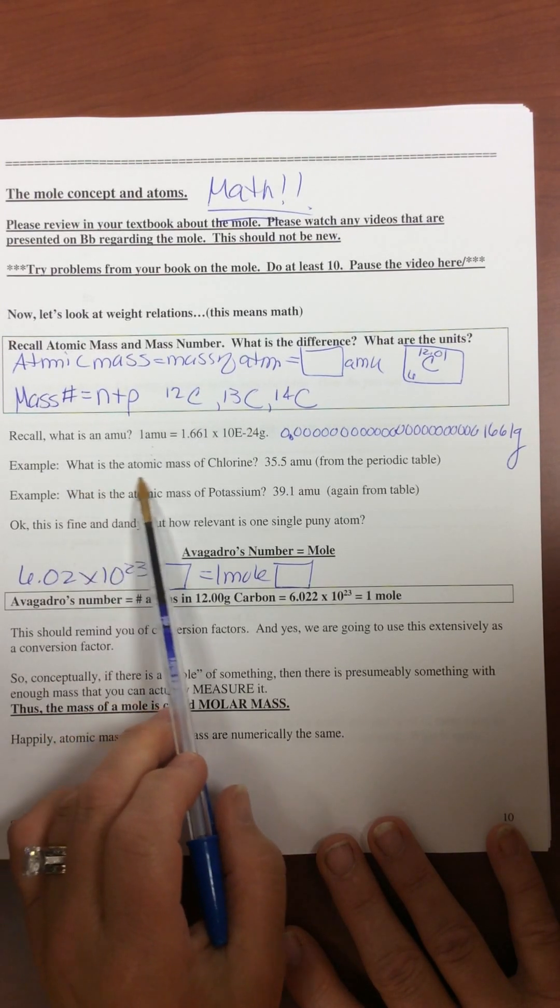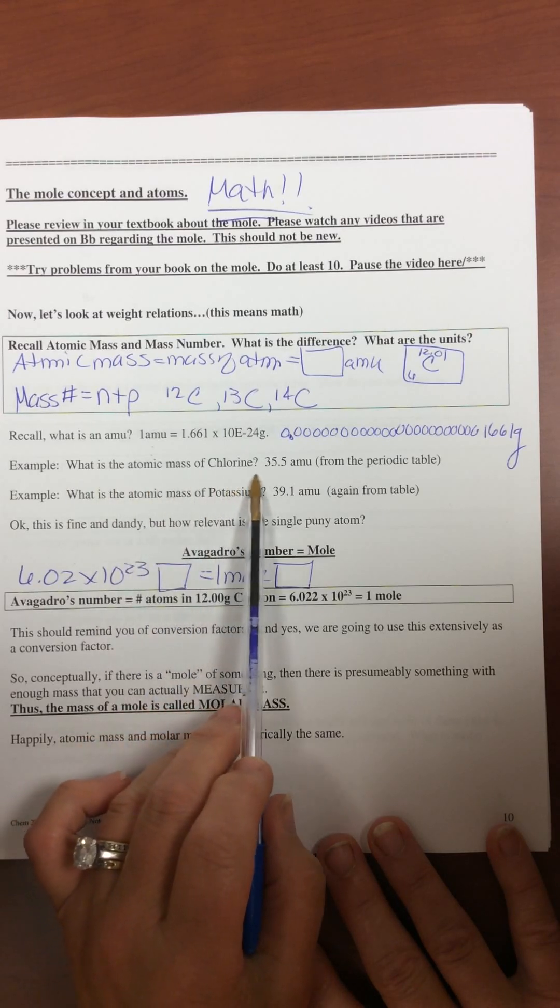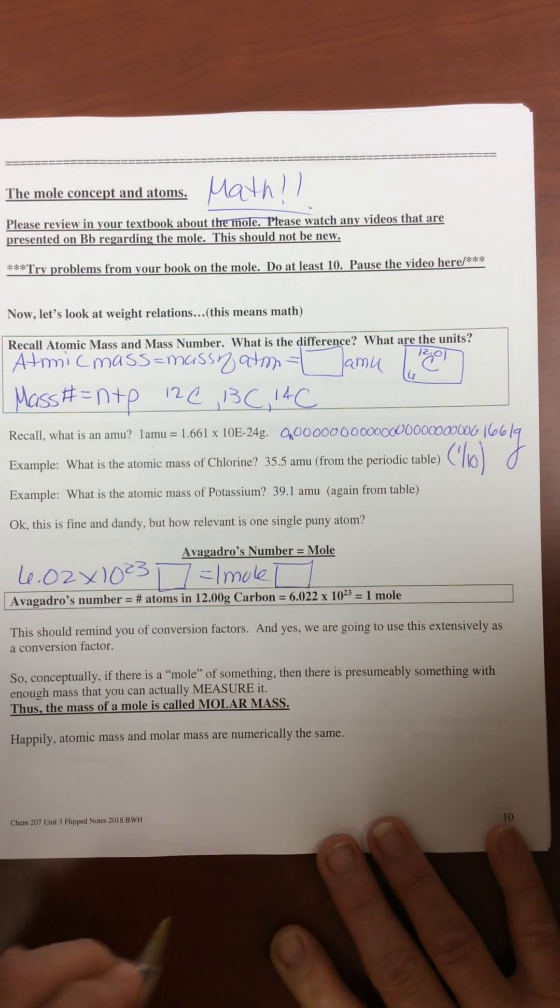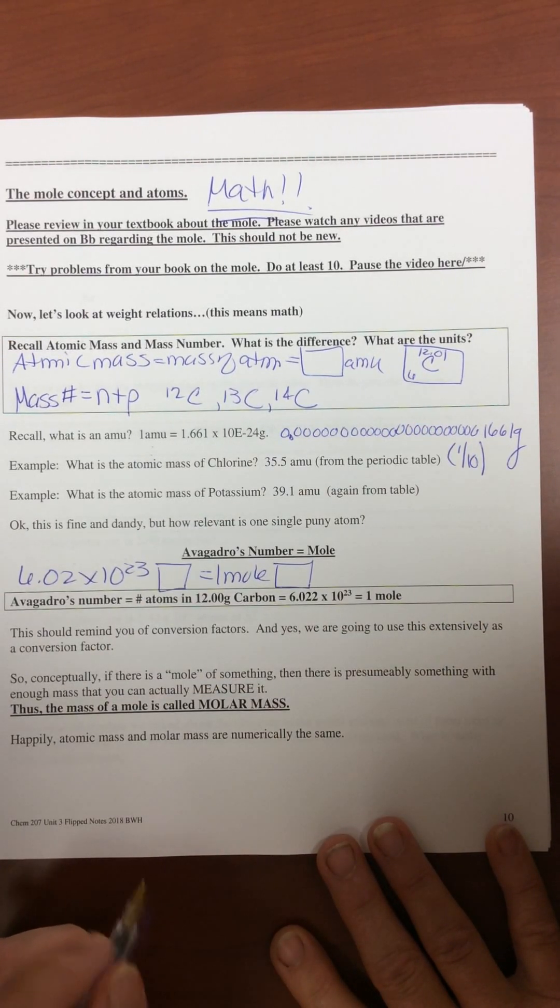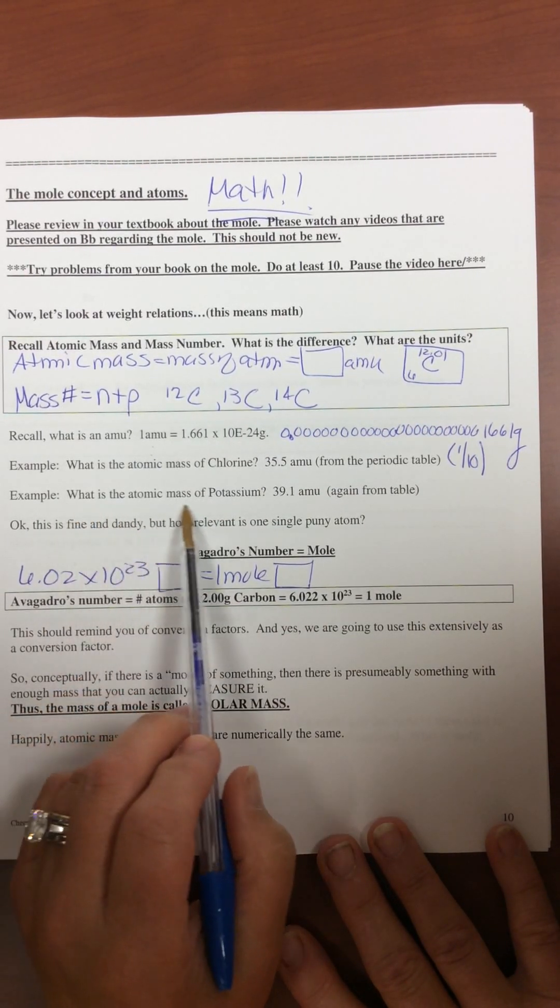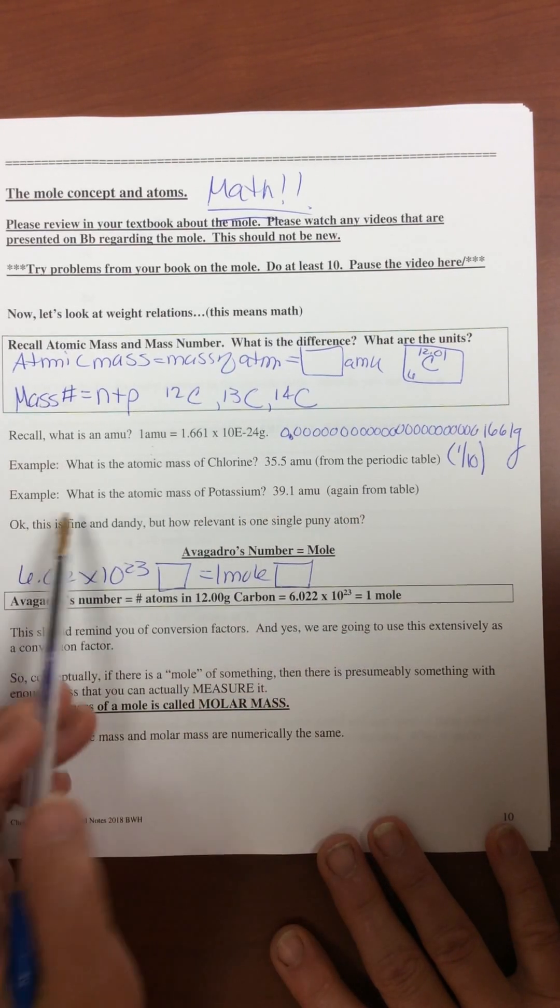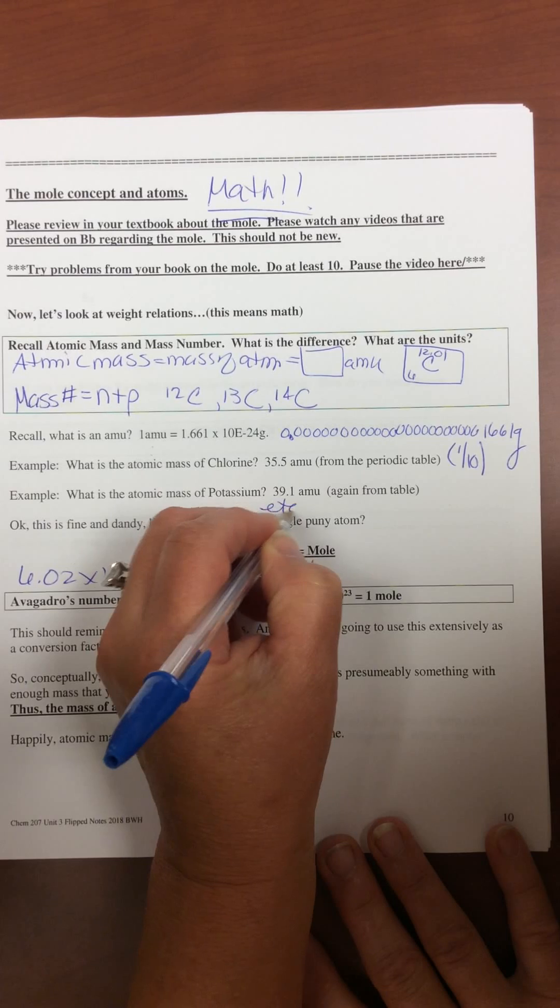So what you do is you go to your periodic table, you look it up and you find the atomic mass. So you go to the periodic table and the atomic mass of chlorine is 35.5. We're going to round off as a matter of standard practice to the tenth of a gram. Atomic mass of potassium, 39.1 AMU, again from the table. And you can do this all day long.